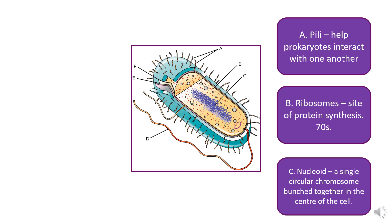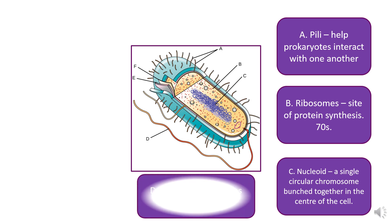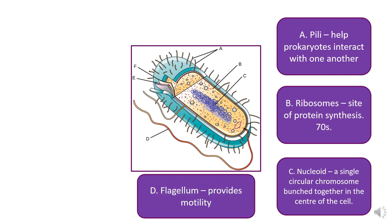The nucleoid is the genetic material: it is a single circular chromosome, all bunched together in the middle of the cell. This is a key difference from eukaryotic cells, which have linear chromosomes. So prokaryotes have one single circular chromosome, while eukaryotes have linear chromosomes.